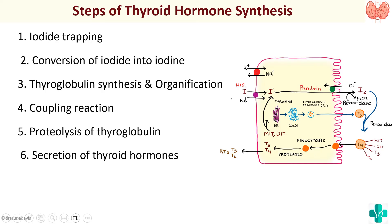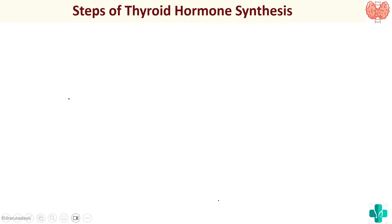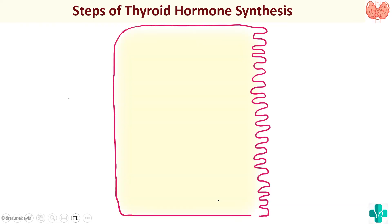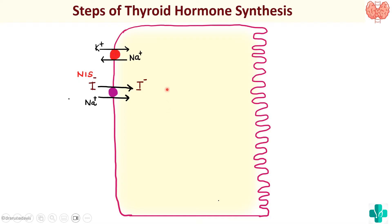It is very important that we supplement this answer with the help of a neat labeled diagram. So suppose this is a thyroid follicular cell. The basic raw materials required for thyroid hormone synthesis are iodine as well as thyroglobulin. Our first step is to take iodide from the blood into the follicular cell. For that we have a specialized pump called the sodium iodide symporter, which transports iodide as well as sodium into the follicular cell. This is an active pump which requires the sodium-potassium ATPase pump. So this first step is called iodide trapping.